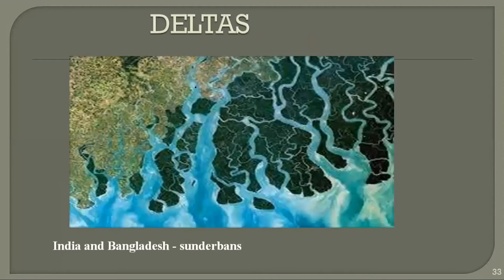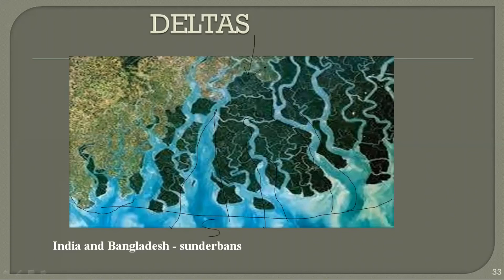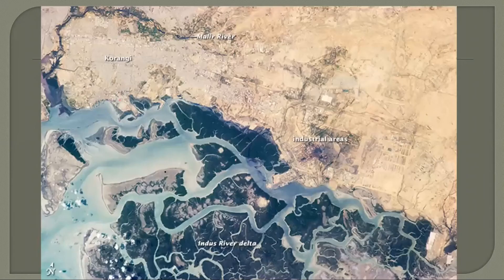Here is an example of a delta from a river in India and Bangladesh. You can see the land area and the dominance of marine processes like waves cutting deep into it — it is a mixture of wave and fluvial processes. You can see the proposed coastline and how nature differs from what we generally think. The green areas are mangrove forests, and these areas are very famous for fishing and agriculture.